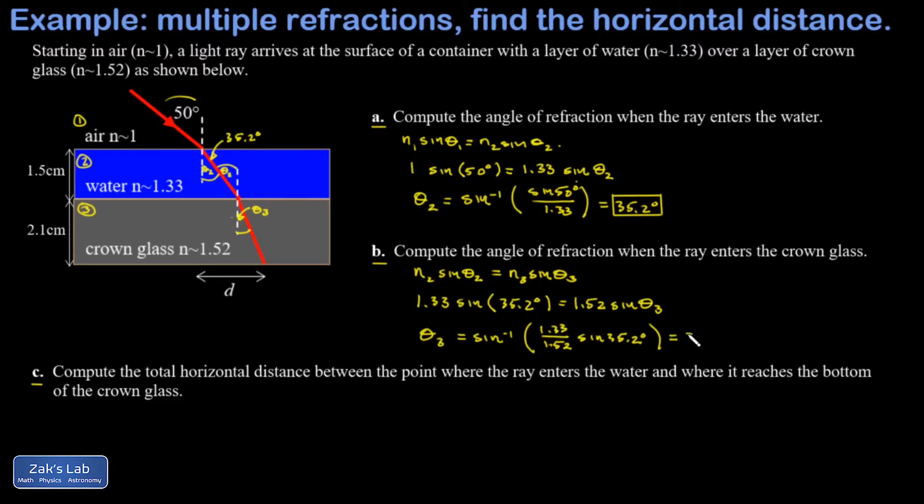Finally, I want to get the total horizontal distance between the point where the ray enters the water and where it reaches the bottom of the crown glass. If I look at that first refraction, I'm just going to continue the normal line straight down, and then this little line segment is a contribution to that total horizontal displacement. I'll call that d1.